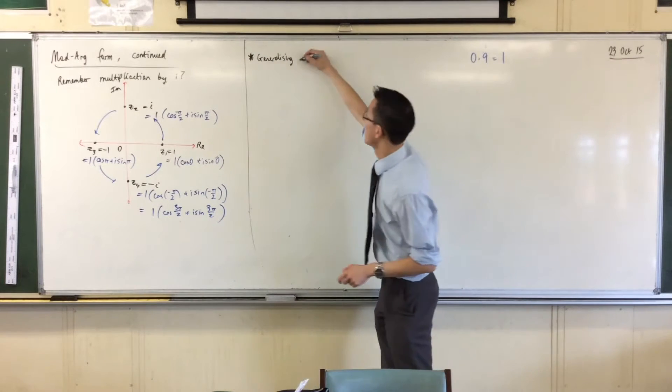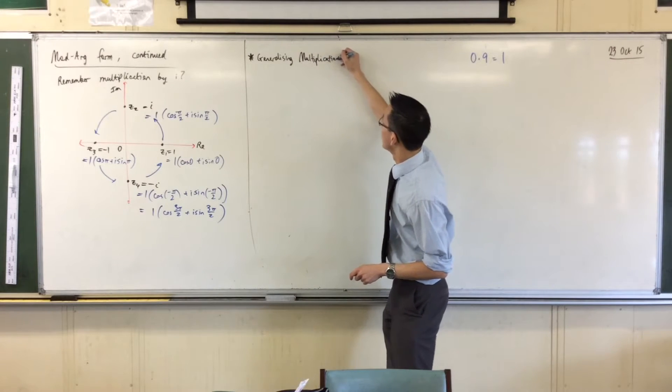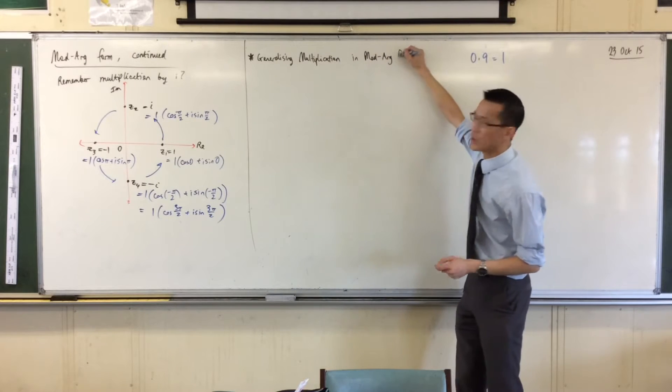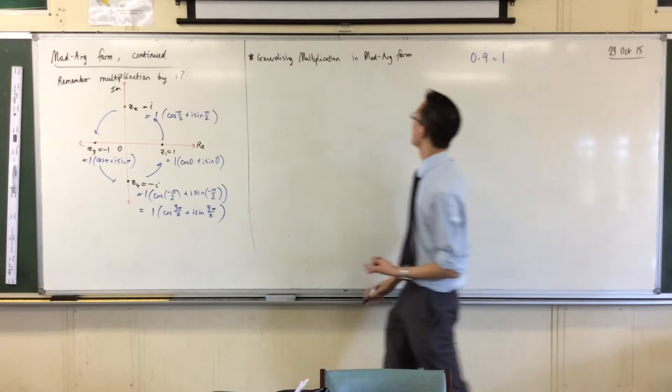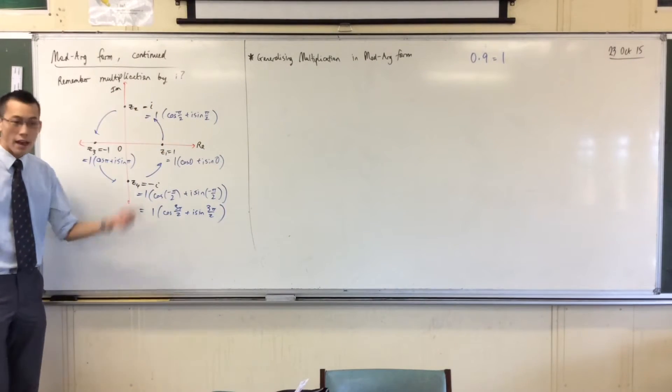Generalizing multiplication, that's what we're trying to understand, multiplication in mod arg form. Because we already know how to multiply in x plus iy form, it's just arithmetic. How do we do it here?